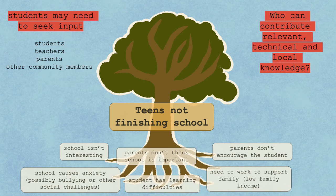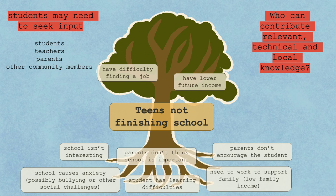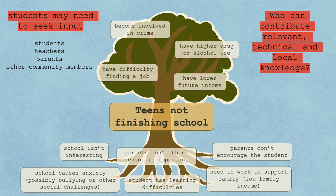In addition to asking community members about the causes of the problem, we also ask about the effects of the problem. In this case, several effects came to light: teens who don't finish school could have difficulty finding a job, have lower future income, have higher drug or alcohol use, or become involved in crime.